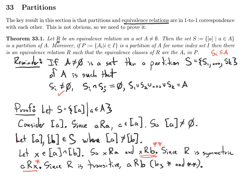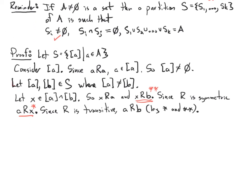Since a is related to b, but by the result from the previous section — example 32.2 — we said a is related to b if and only if the equivalence classes are equal. So by example 32.2 in the previous video, it must be that the equivalence class of a equals the equivalence class of b.